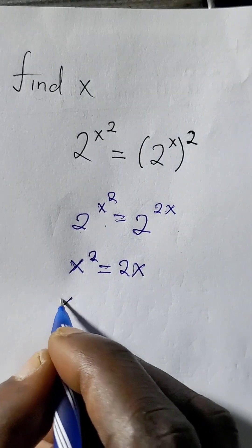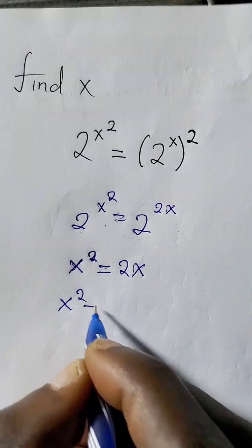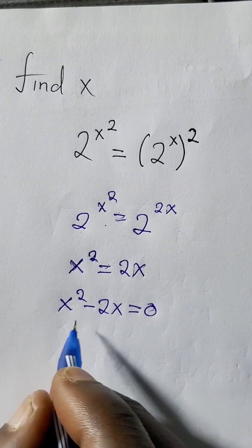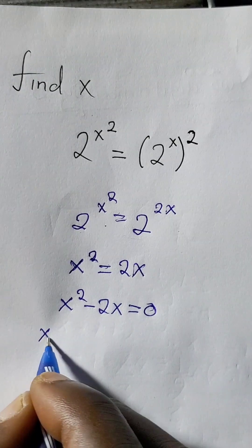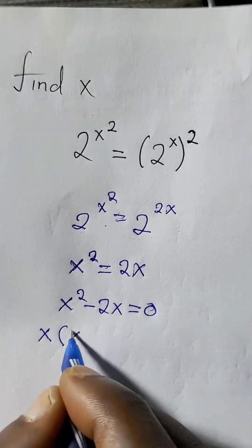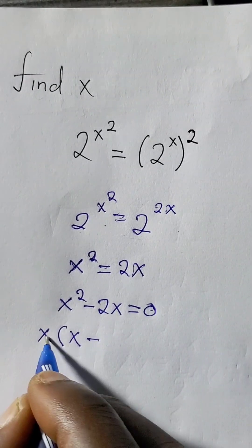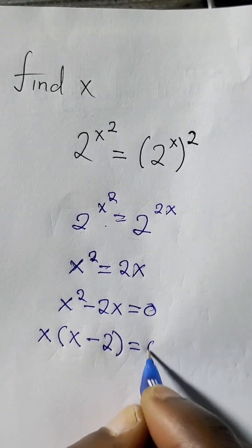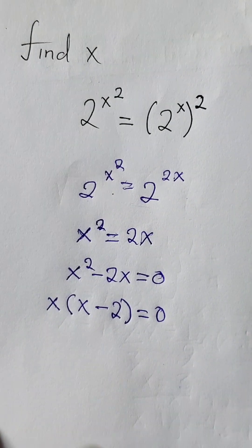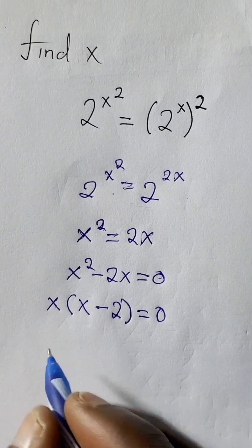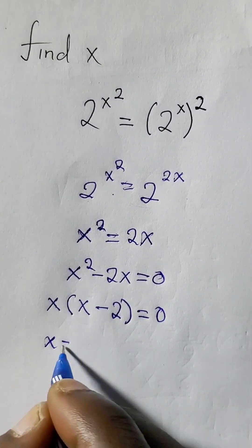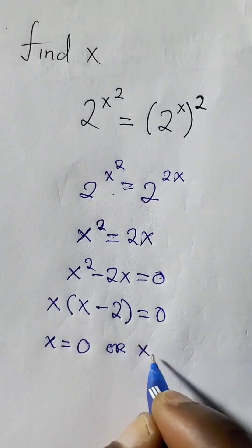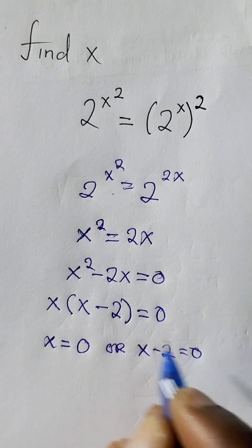Then we solve for x: x squared minus 2x equals 0. We factorize — x is common, so x times (x minus 2) equals 0. So x equals 0 or x minus 2 equals 0.